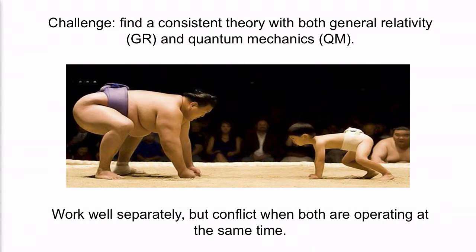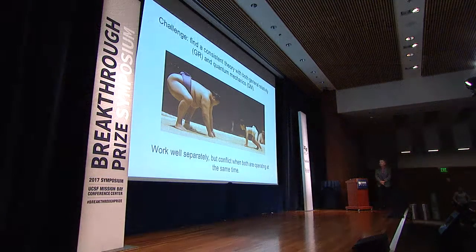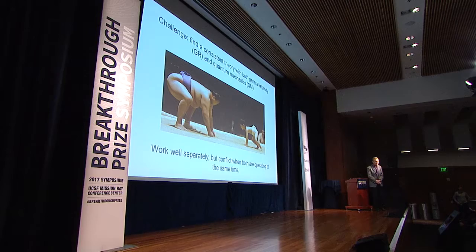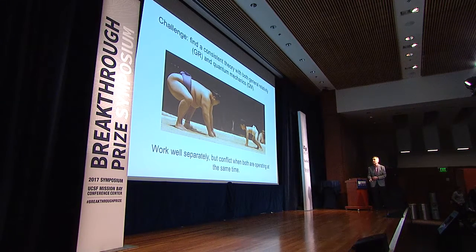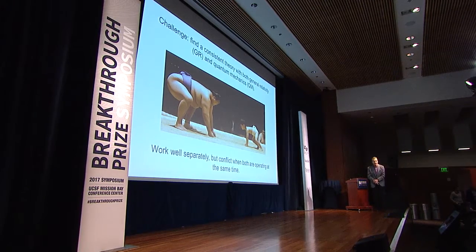There are two great laws of physics: general relativity and quantum mechanics. These are fantastic theories. They've each been around for about 100 years. They've each made countless number of predictions. They really govern the world in which we live and understand, and the universe in which we live and which we understand comes from these two theories. Most of the time you only talk about one theory or the other. General relativity generally addresses the very large, and quantum mechanics generally addresses the very small. You have to get to rather extreme situations before you deal with both at the same time.